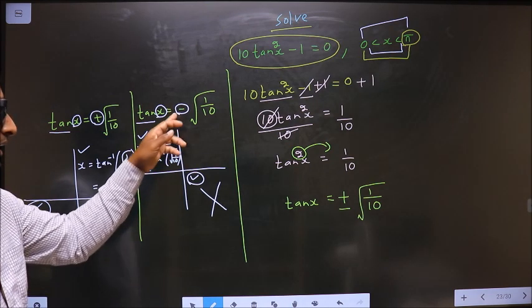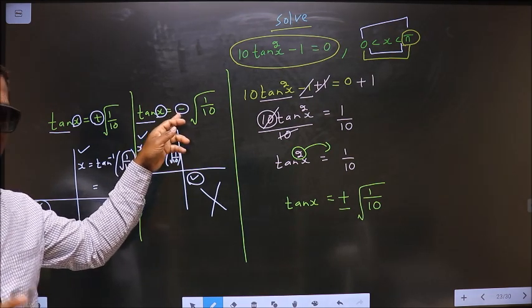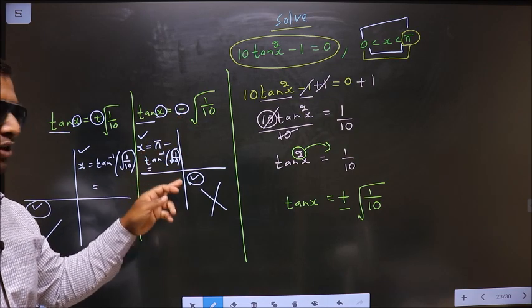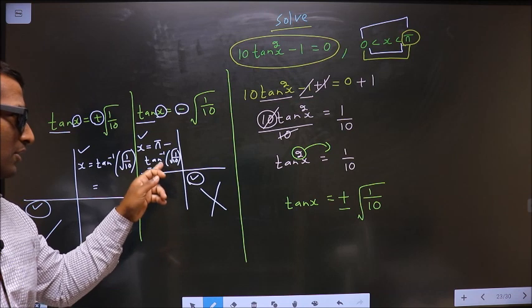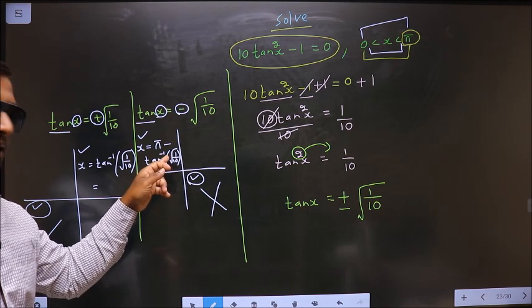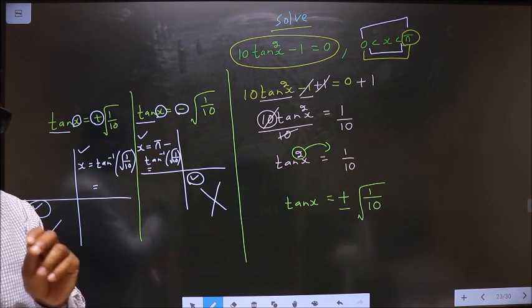Now this negative sign is only for selecting the quadrants. Once quadrants have been selected, you should not place negative sign again here. Remember that.